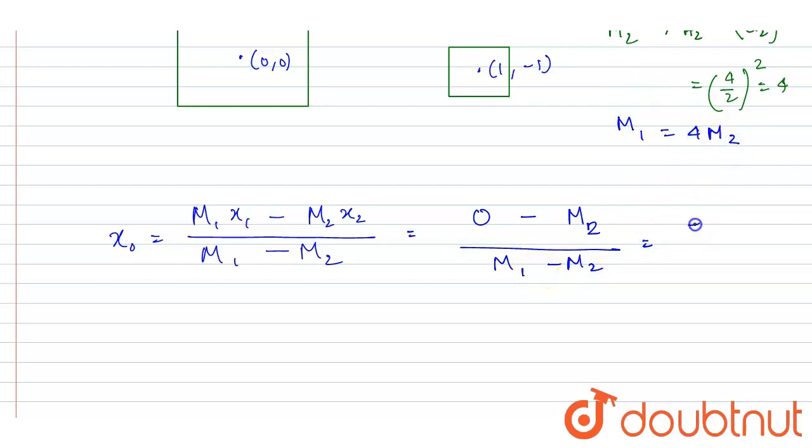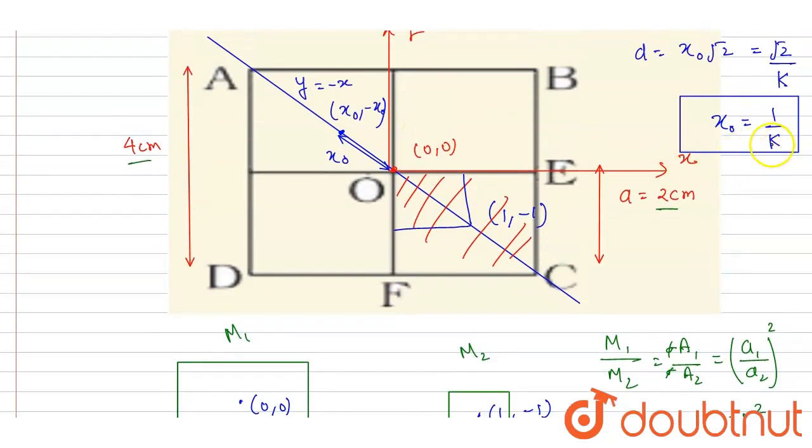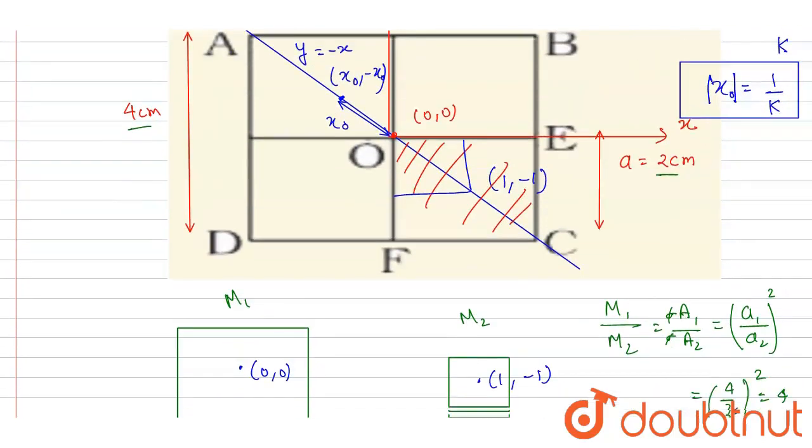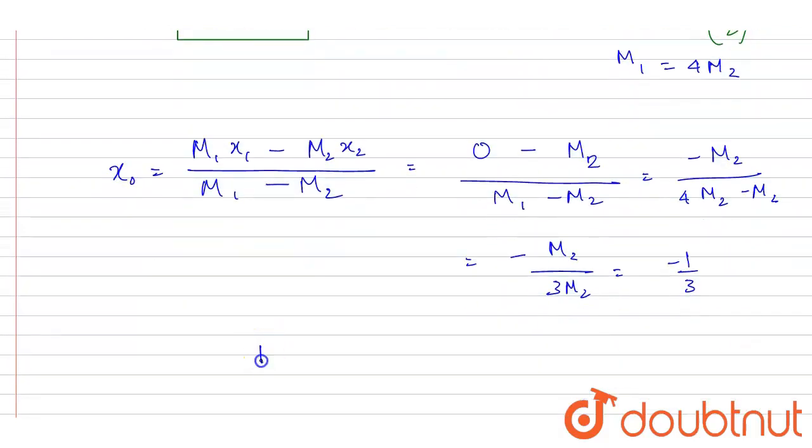Let me extend one more step. I will write 4 m2 minus m2, so it will be minus m2 by 3 m2, so it is minus 1 by 3. As we have seen, the mod of x coordinate is 1 by k, so k will be 1 by mod of x coordinate. We are talking about the distance, so it is 3, and this is the answer of this question.